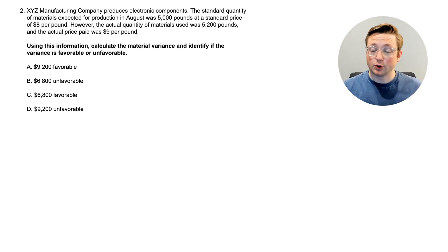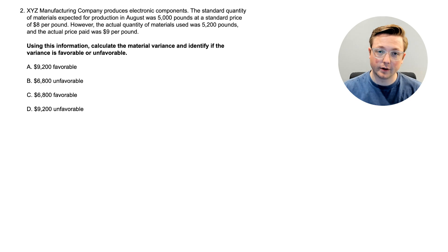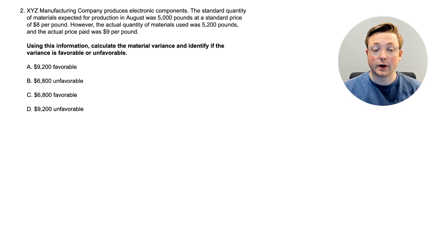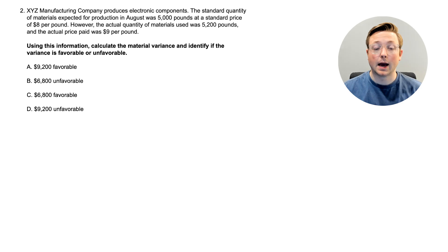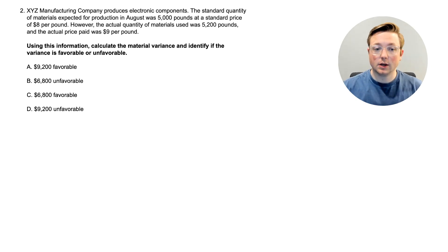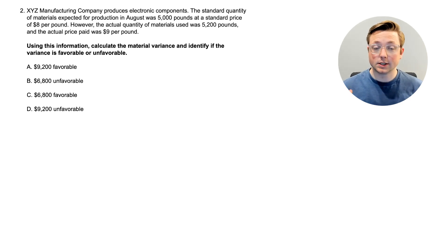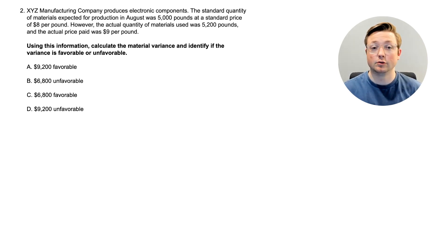Here we are at question two. As always, read the last part first: calculate the material variance and identify if it is favorable or unfavorable. XYZ Manufacturing Company produces electronic components. The standard quantity of materials expected for production in August was 5,000 pounds at a standard price of $8 per pound. However, the actual quantity of materials used was 5,200 pounds and the actual price paid was $9 per pound. Pause the video if you have an idea of how to do it; otherwise let's go to the answer.